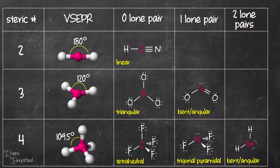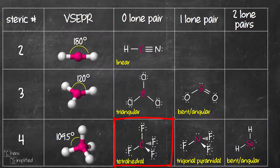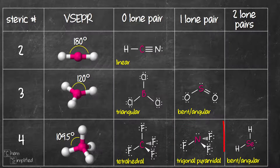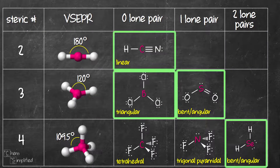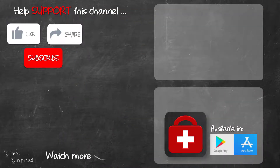To recap, we have looked at six molecules with different geometries. HCN has steric number 2 with no lone pair, giving linear geometry. BCl3 with steric number 3 and no lone pair has a triangular shape. SO2 with one lone pair has a bent or angular shape. CF4 with steric number 4 and no lone pair has a tetrahedral shape. NF3 with one lone pair has a trigonal pyramidal shape, and H2Se with two lone pairs has a bent shape. Notice that all solid bonds show bonds on the same plane as the screen, and we use solid and dash wedges in tetrahedral and trigonal pyramidal structures.